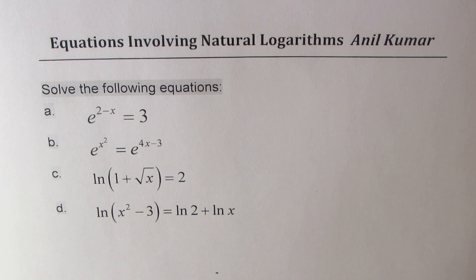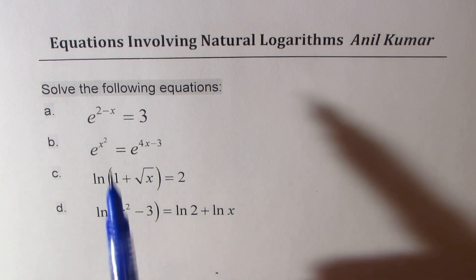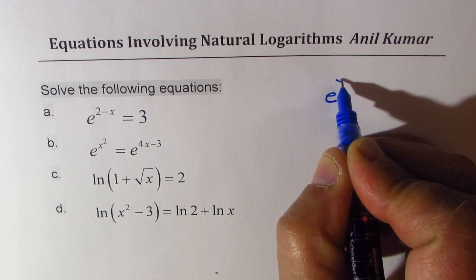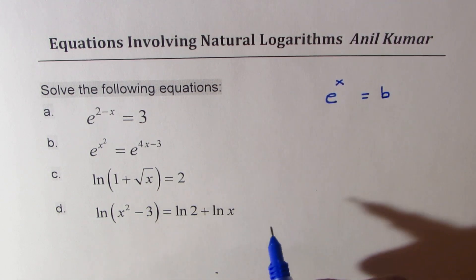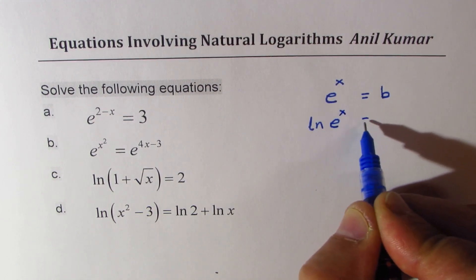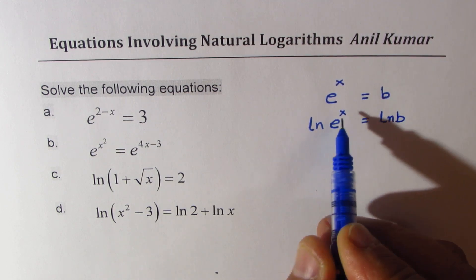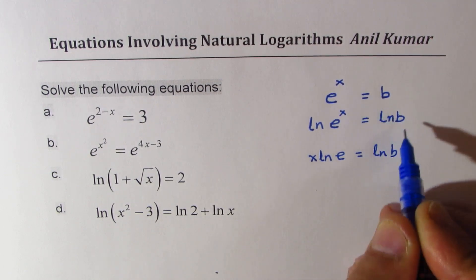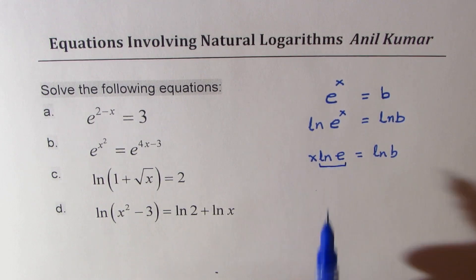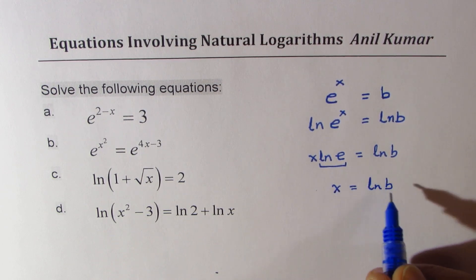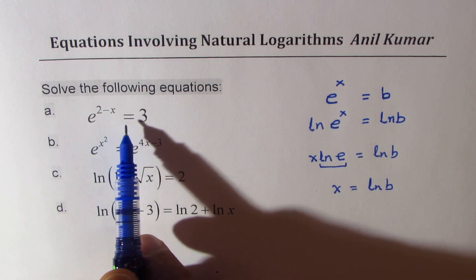To solve these questions, we are going to use some basic properties. One property that helps with the first equation: if E to the power of x equals some constant b, we take ln on both sides, getting x·ln(e) equals ln(b). Since ln(e) equals 1, we get x equals ln(b). That is the general solution for equations of this type.